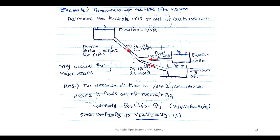The continuity equation states that q1 + q2 = q3, so the flow rate is v1·A1 + v2·A2 = v3·A3. Because all pipe diameters are equal (d1 = d2 = d3 = 1 ft), the areas cancel and we get v1 + v2 = v3. This is Equation 1, which we will use later.